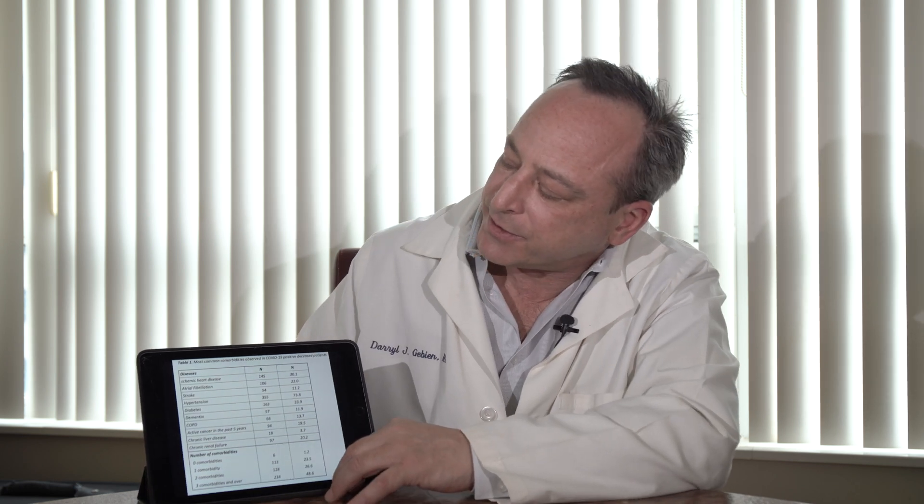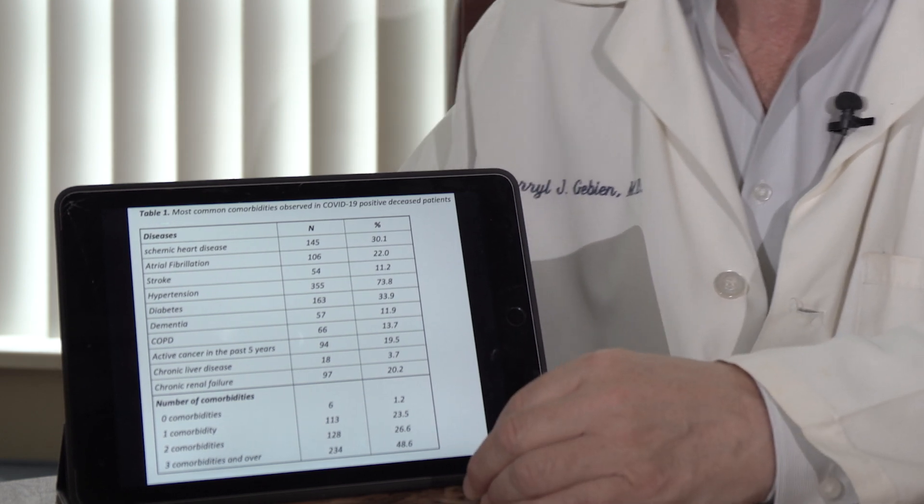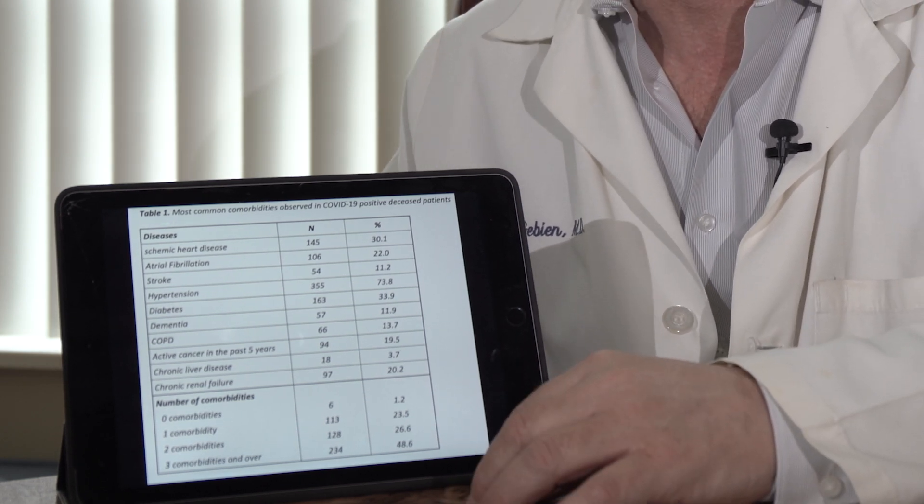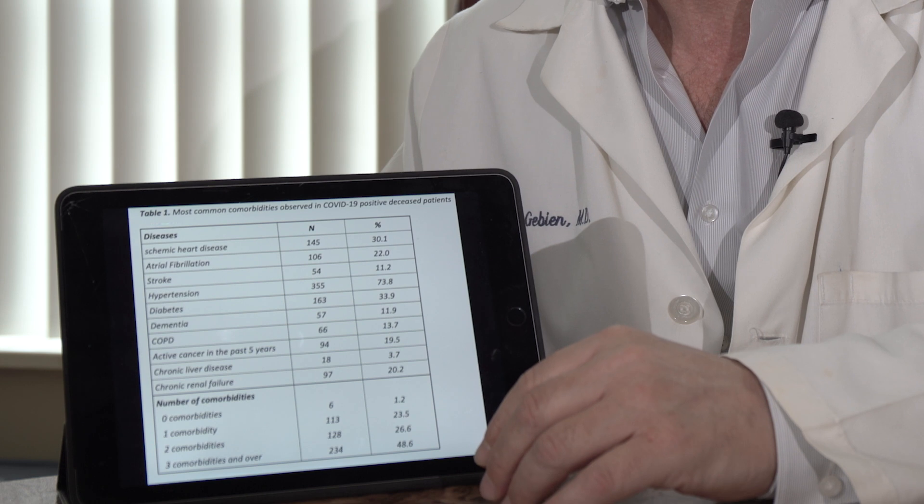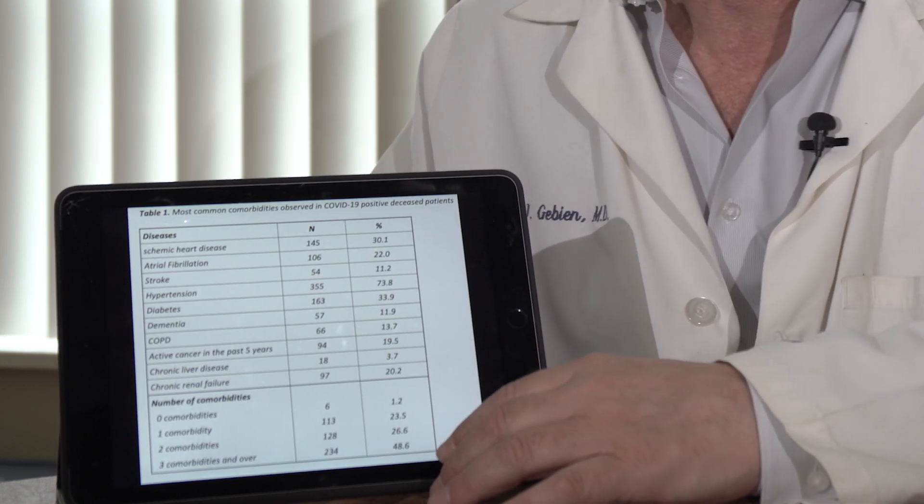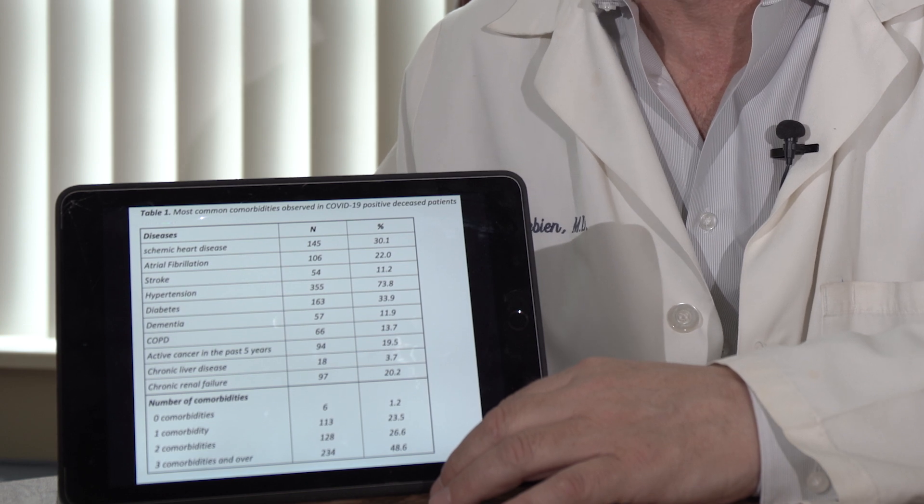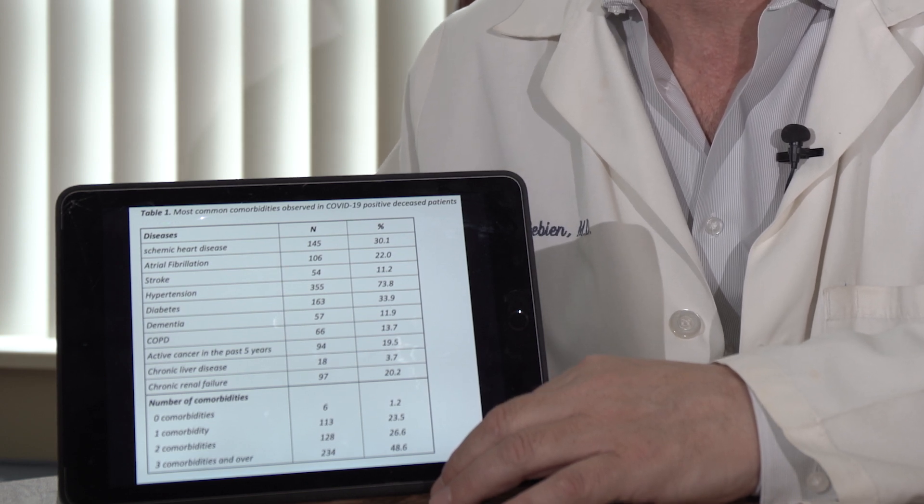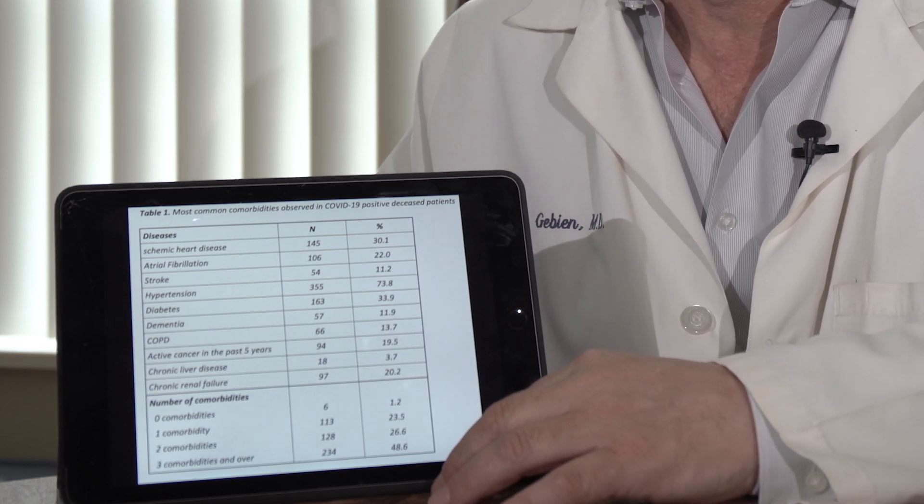There's other conditions here too. Ischemic heart disease - this means people who have had a history of heart attack or angina who are at higher risk. There's also stroke, atrial fibrillation, and atrial fibrillation can be controlled with medications to minimize the risks from COVID-19.